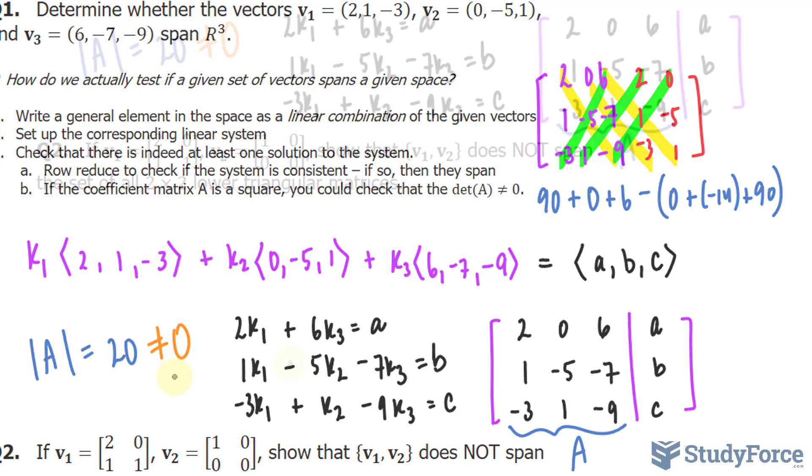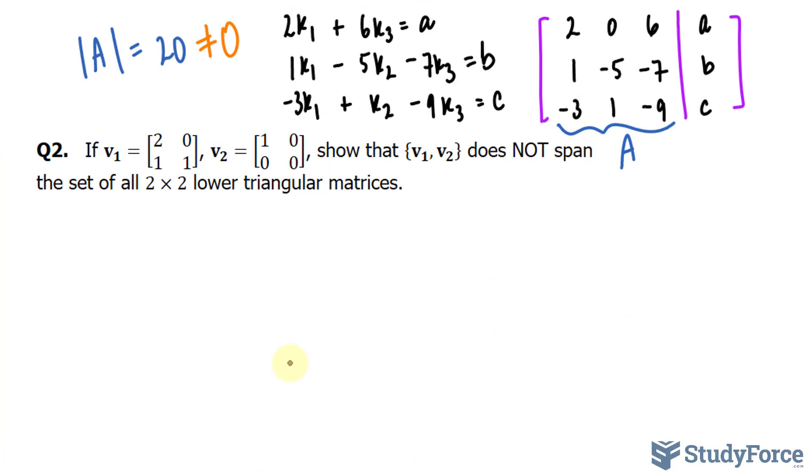Let's move on to another question, question 2. We're asked, if we have the vector V1 and V2, show that the set containing V1 and V2 does not span the set of all 2 by 2 lower triangular matrices. A lower triangular matrix would look like this. Let's say that that is A, B, and C, and this element is occupied with 0. So really quickly, I will set K1 as my constant, multiplied to 2, 0, 1, and 1, plus K2, 1, 0, 0, and 0, and that should equal to A, 0, B, and C.